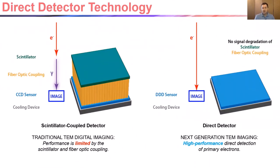I'm going to start by describing the differences between traditional and direct TEM detectors for those who aren't already familiar. In a traditional TEM detector, like the one on the left, electrons from the beam are incident on a scintillator in which they're converted to photons. Those photons then travel through a fiber optic coupling to the sensor where they form an image. In contrast, in the direct detector, like the one on the right, electrons from the beam are directly incident on a radiation hardened sensor where they form an image.